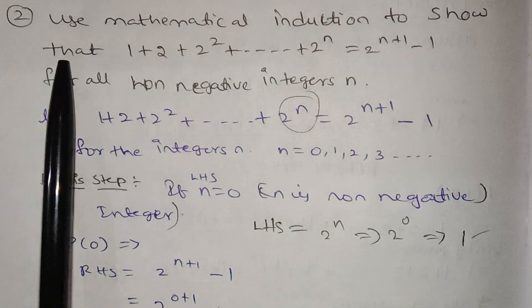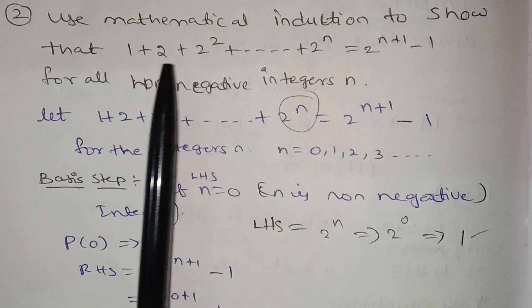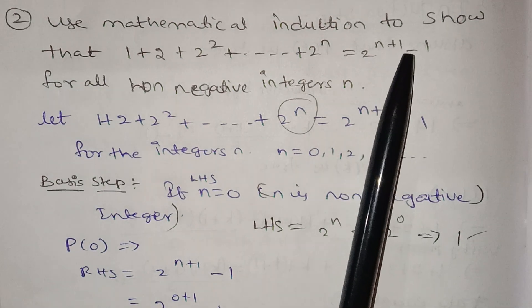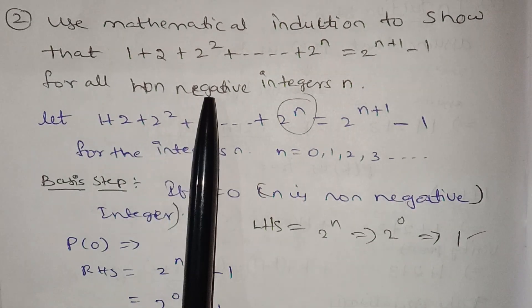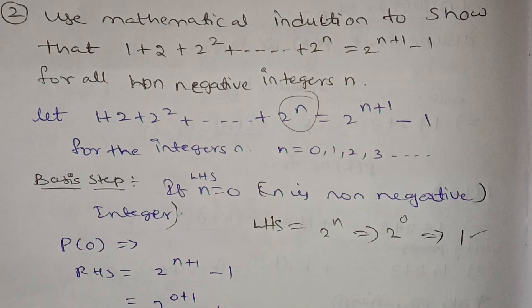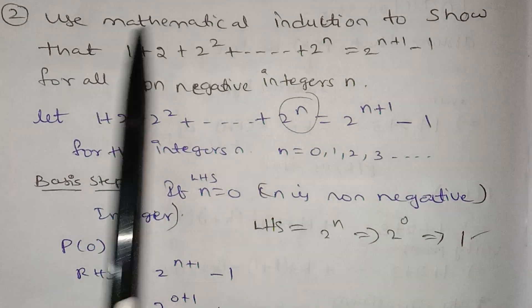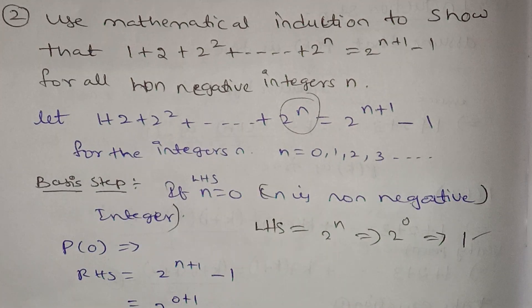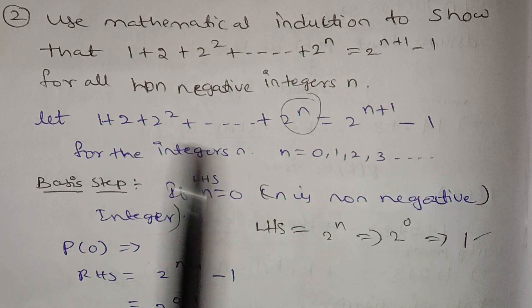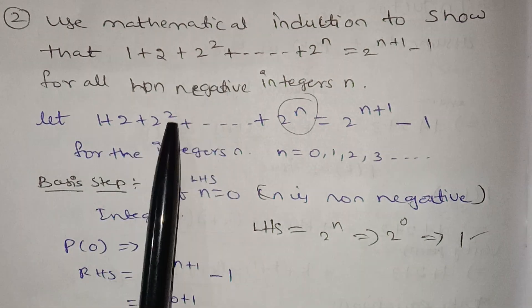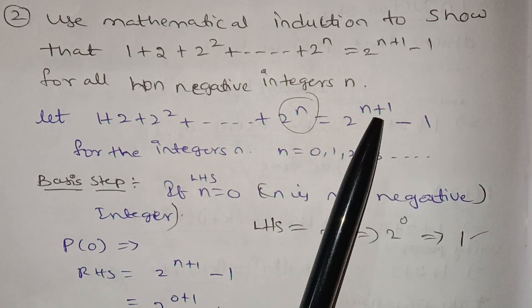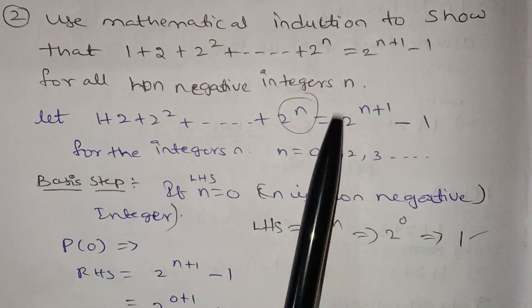Now, use mathematical induction to show that 1 + 2 + 2² + ... + 2ⁿ = 2^(n+1) − 1 for all non-negative integers n. Here we have the statement: the LHS part is 1 + 2 + 2² + ... + 2ⁿ and the RHS part is 2^(n+1) − 1.